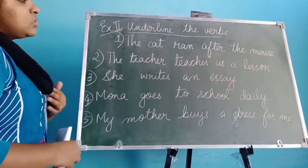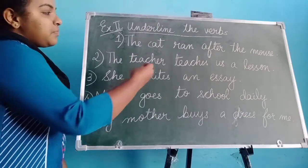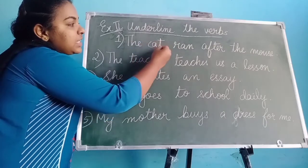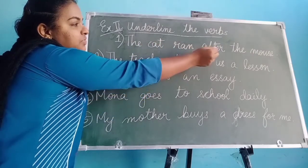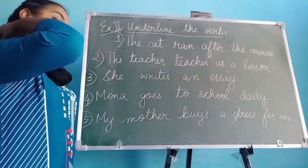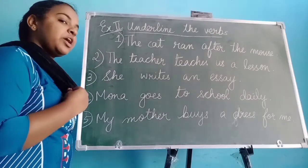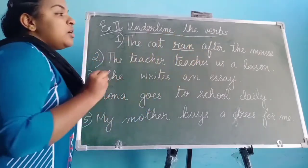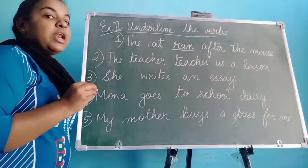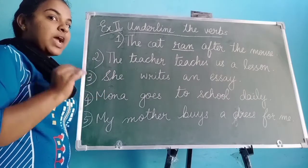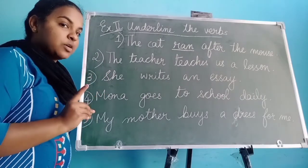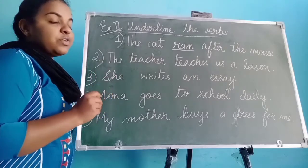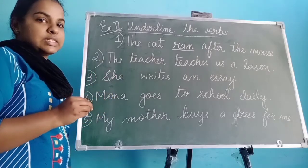So what is our first question? The cat ran after the mouse. What is the action word here? Ran. So you have to underline 'ran'. Any action word is known as a verb, so you have to find the action word in the following sentences.